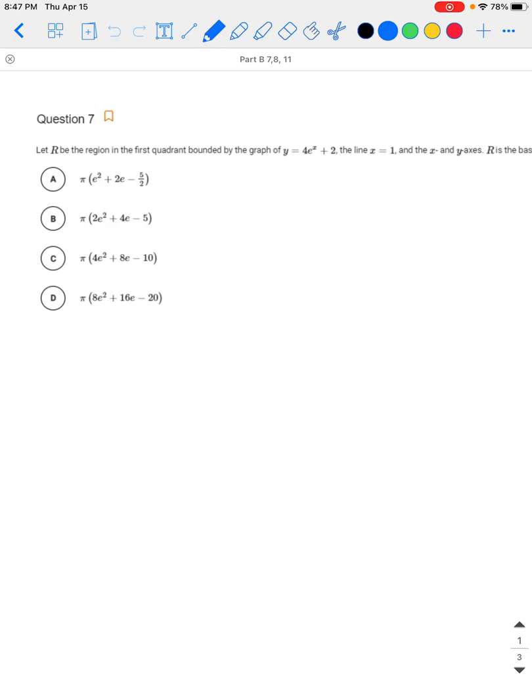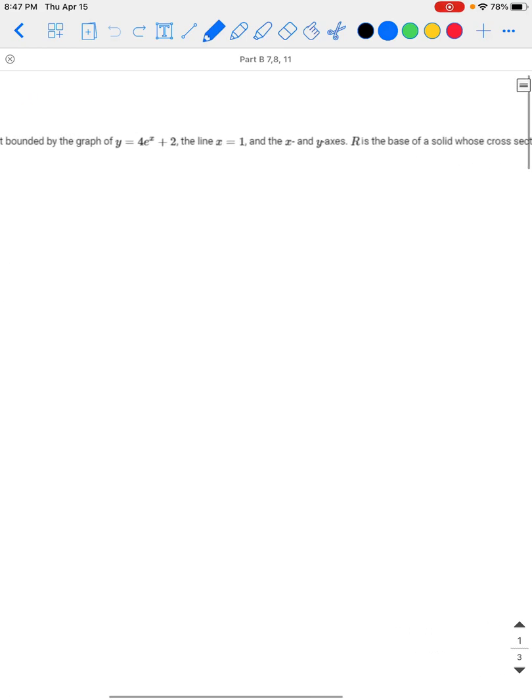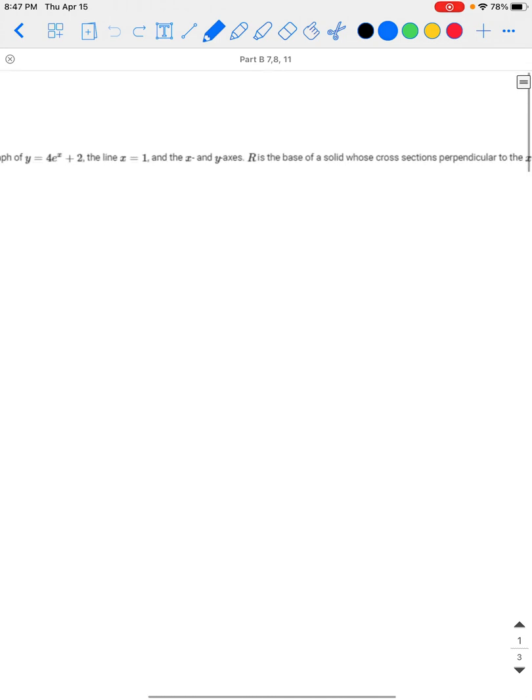In this question, let R be the region in the first quadrant bounded by y = 4e^x + 2, the line x = 1, and the x and y axes. R is the base of the solid whose cross sections perpendicular to the x-axis are semicircles. What is the volume of this solid?